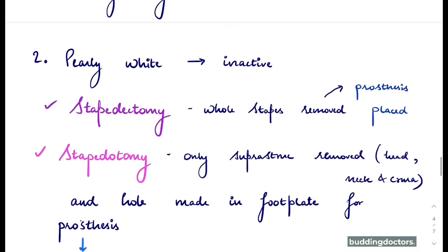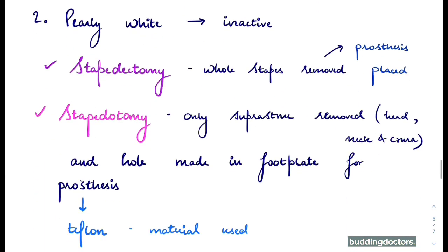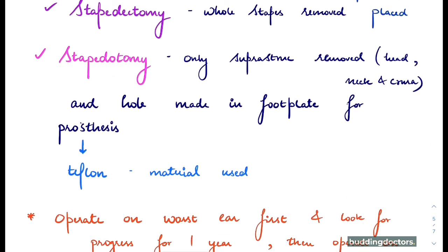In inactive cases, when the tympanic membrane is pearly white, surgery can be performed. Stapedectomy involves removal of the whole stapes and placement of a prosthesis. Stapedotomy involves removal of only the suprastructure — the head, neck, and crura — and the footplate is reconstructed with a prosthesis. The most common prosthesis material is Teflon.